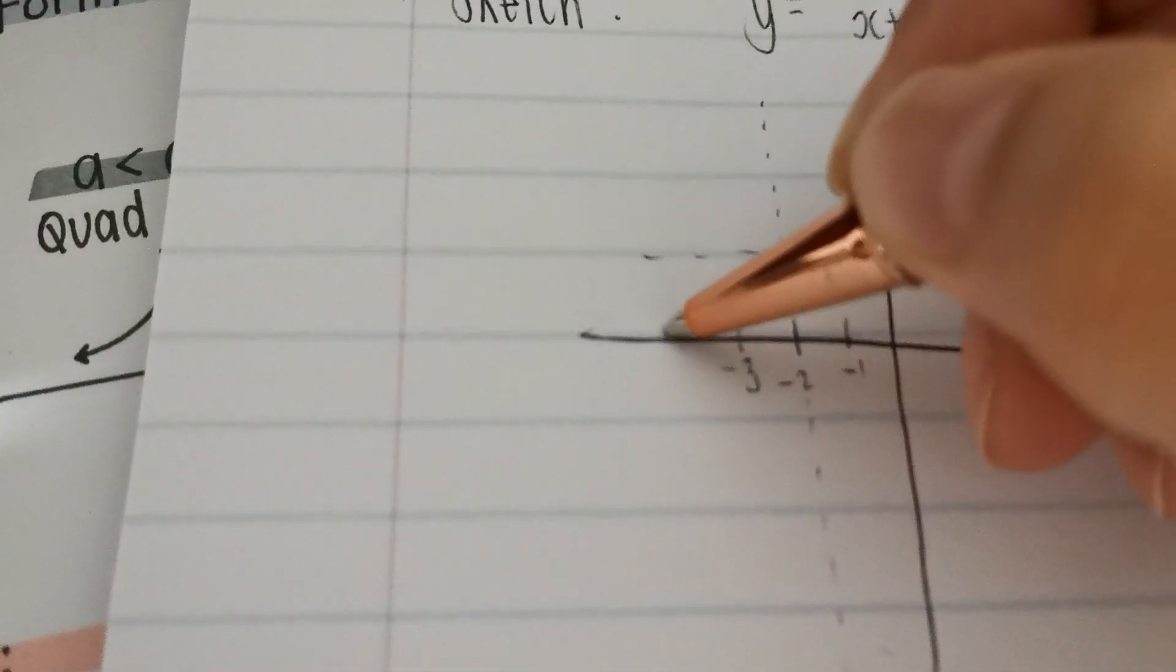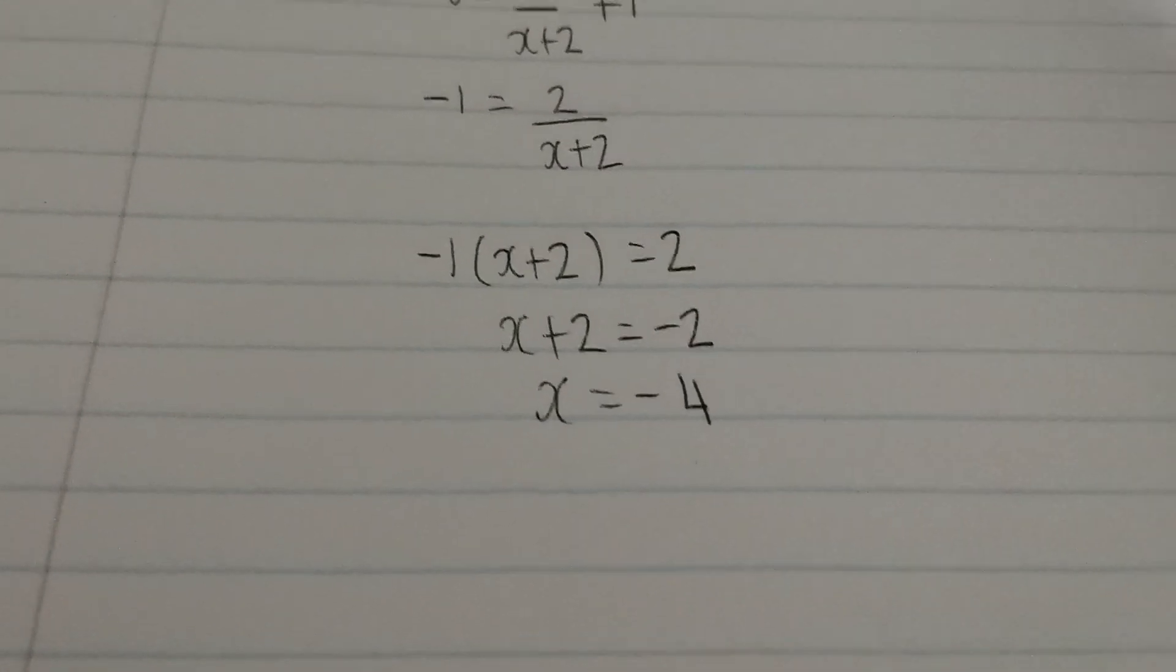And I'm taking this over. All right, so that means x intercept is at negative 4. So let's say negative 3. Ah, damn, there's my five-minute mark. Almost done. Well, I hope I'm almost done.